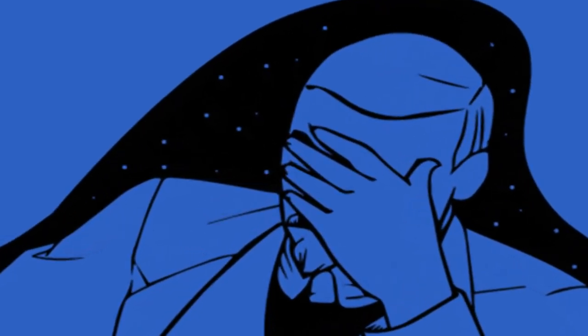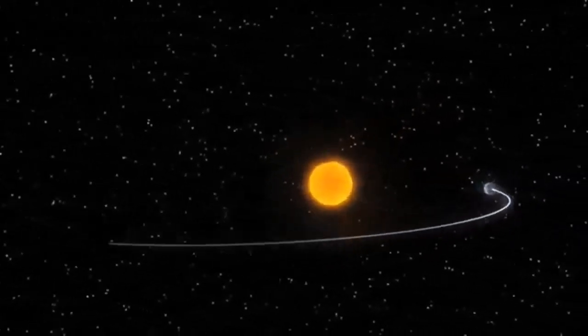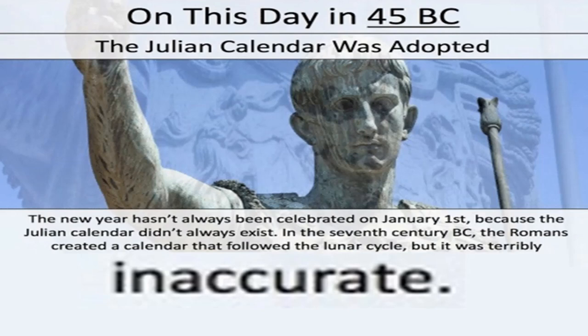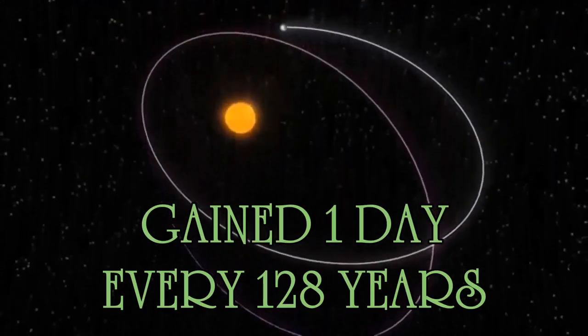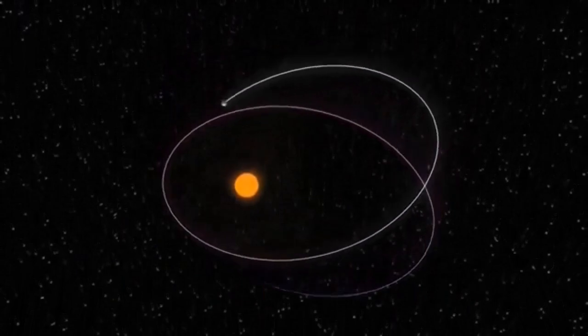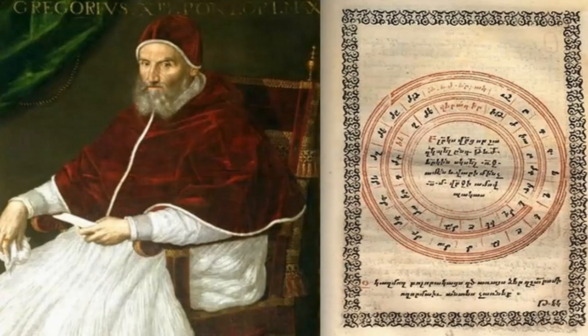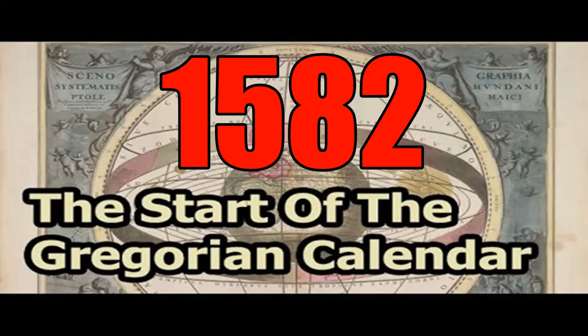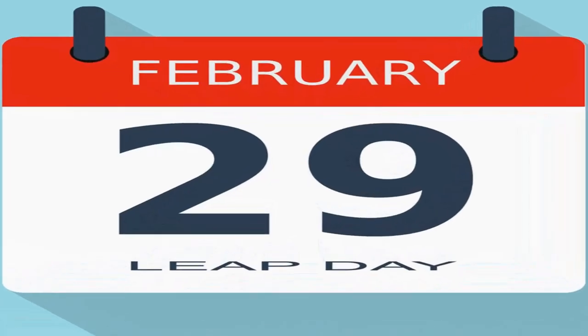Sa totoo lang, nakakalito ito dahil ang gamit na kalendaryo noon ay ibang-iba sa gamit natin ngayon. Nagkaroon man ng kaunting ayos si Julius Caesar noon, di pa rin daw ito perpekto dahil susobra pa rin ng isang araw sa loob ng 128 taon. Naging maayos lamang umano ito noong ipinakilala ni Pope Gregory XIII ang kalendaryong Gregorian noong 1582, kung kailan ginawang leap day ang ikadalawang putsyam ng Pebrero.